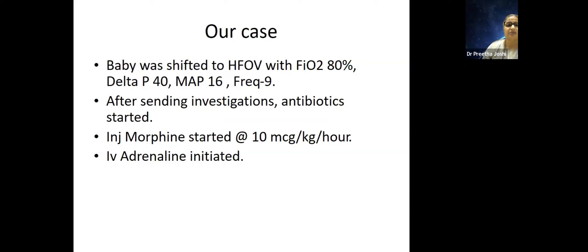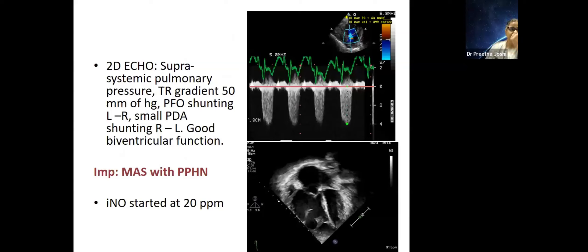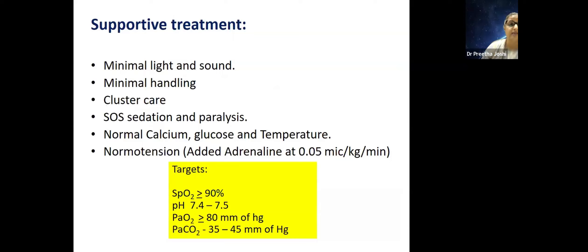In our case we shifted this child to HFOV with FiO2 of 80%, frequency of 9 Hz, MAP of 16, and delta P of 40. After sending investigations, the child was started on IV adrenaline. Echo showed suprasystemic pulmonary pressures with a TR gradient of 50. We also started inhaled nitric oxide, and supportive treatment: minimal light and sound, minimal handling, cluster care, maintained normal calcium and glucose, and maintained blood pressure with adrenaline and dopamine.